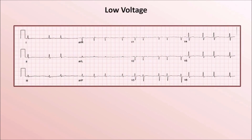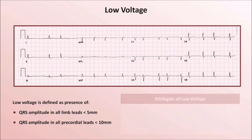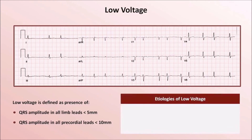There are two last abnormalities to discuss in this video, and these abnormalities typically affect all waveforms. The first is low voltage, as seen here. The presence of low voltage is defined as a QRS amplitude in all limb leads of under 5 mm and/or in all precordial leads of under 10 mm. Low voltage is the consequence of some insulating substance coming between the electrodes on the chest wall and the conduction system.